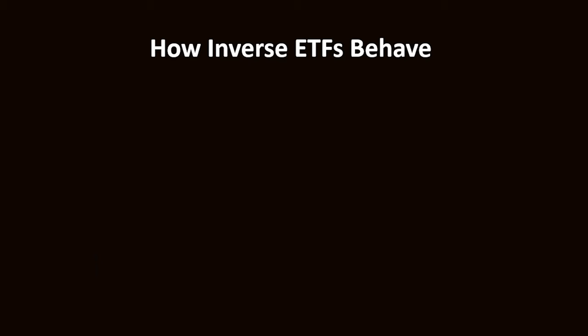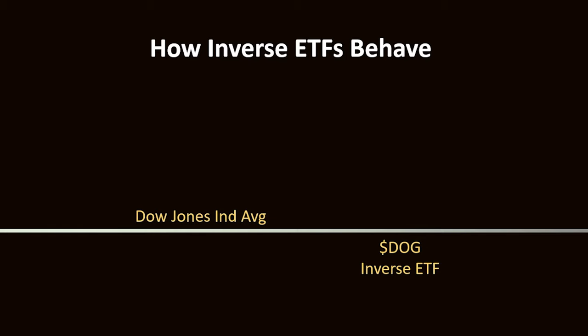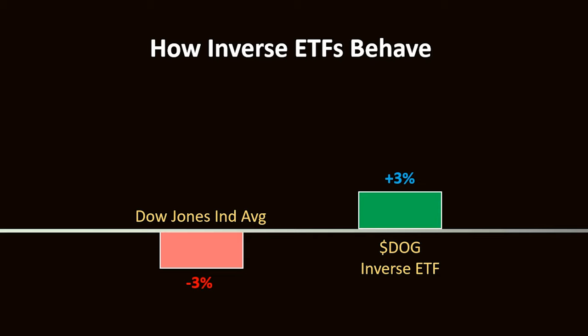So let's move on to the other type of specialized ETFs called inverse ETFs. Now this type of ETF is a little bit more straightforward. Basically, these ETFs aim to achieve the opposite performance of their underlying market index. So for example, if the Dow Jones Industrial Average was down 3% in any given day, then an inverse ETF like the ProShares Short Dow 30, ticker symbol DOG, would be up 3% for that session. It basically performs in the inverse of whatever the underlying index is.